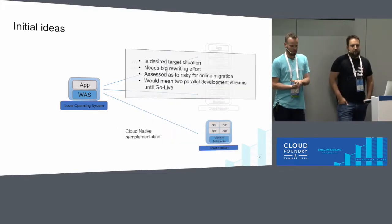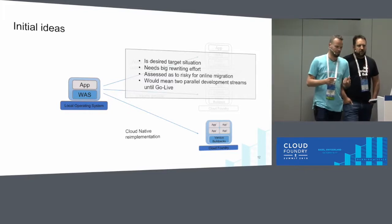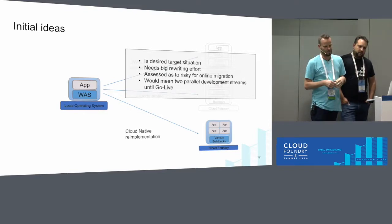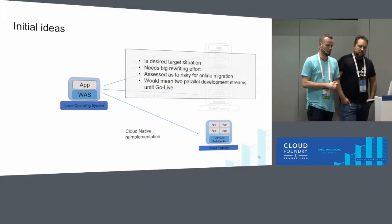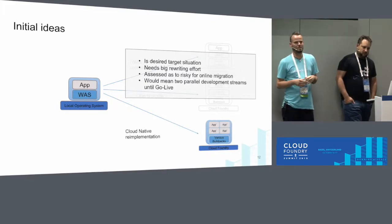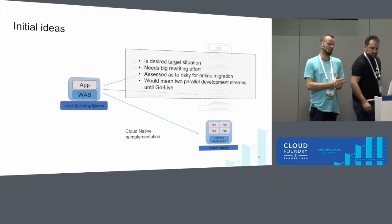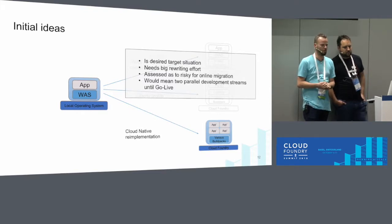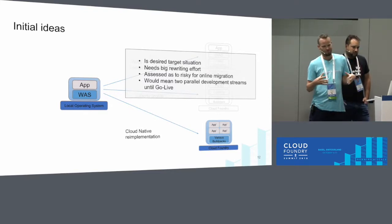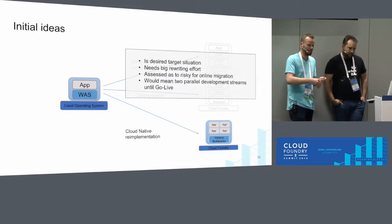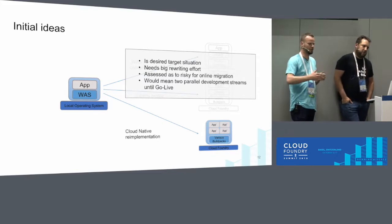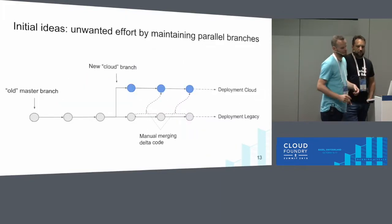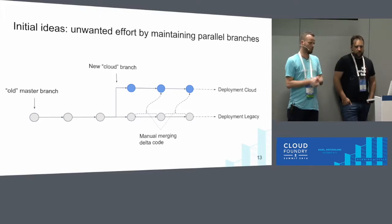Re-implementing in microservices resembled the end state we wanted, but with 230,000 lines of code it would have required a huge development effort, combined with a lot of risk — it was difficult to test it in parallel while the other was still in production on WebSphere. That would have meant maintaining the old code up-to-date until go-live while simultaneously re-implementing everything as microservices. That led us to go with Liberty.